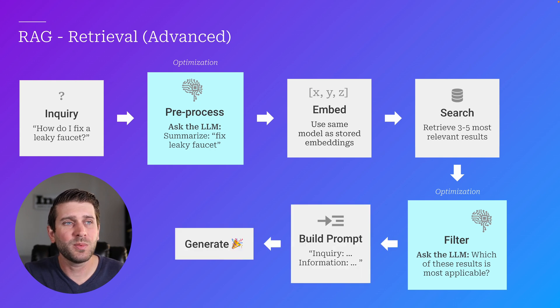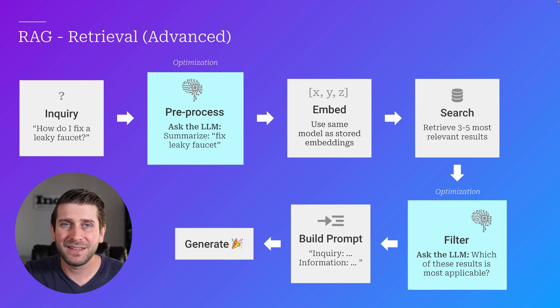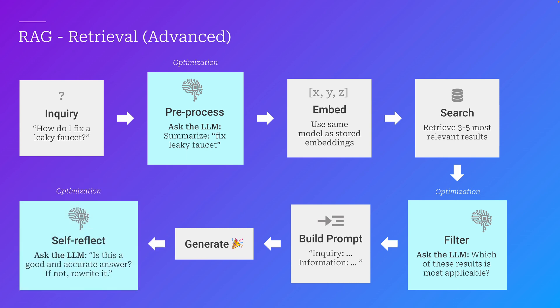Then we build our prompt and we generate. But before we pass the generated content back to the user, we could add another step and use an LLM again to do self-reflection — ask: is this a good and accurate answer? If not, rewrite it, make it better. This gives it one more opportunity to fix any errors in the response.